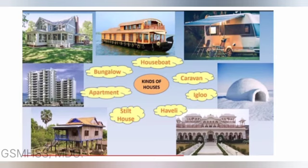What are the different types of houses? There are different kinds of houses. For example: houseboat, bungalow, apartment, stilt house, igloo, caravan, and haveli. Every house protects us from animals and weather conditions.